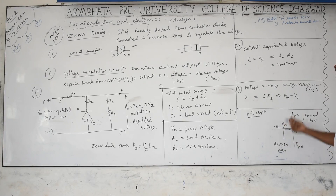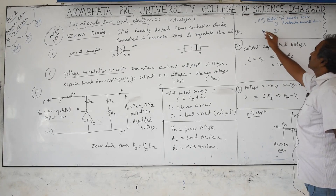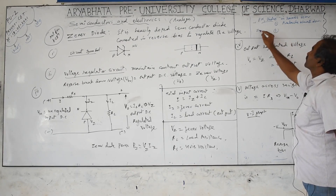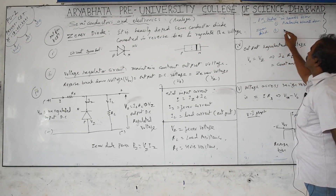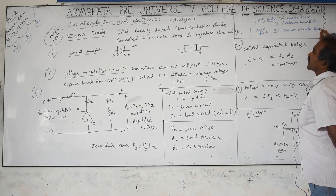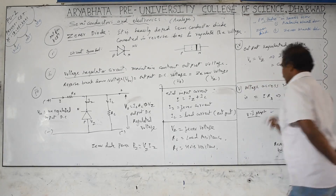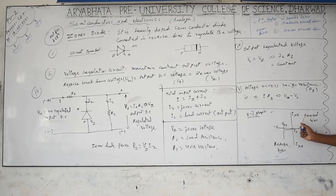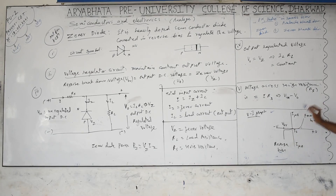The same principle applies to the Zener diode, but the breakdown here is called Zener breakdown. The IV graph is similar for both the ordinary diode and the Zener diode in forward and reverse bias, but the difference is that in forward bias the Zener diode cannot withstand large currents and damages very quickly compared to ordinary diodes.